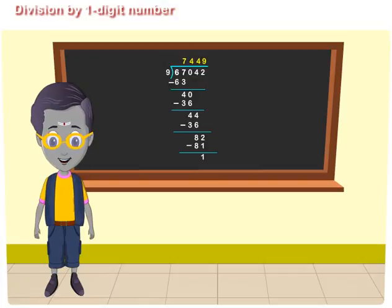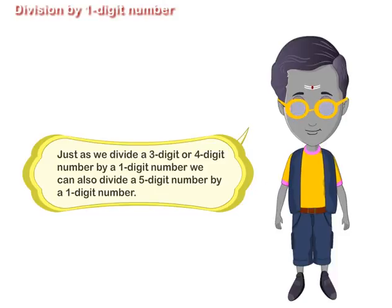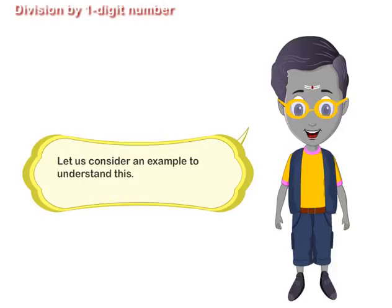Division of a 5-digit number by a 1-digit number. Just as we divide a 3-digit or 4-digit number by a 1-digit number, we can also divide a 5-digit number by a 1-digit number. Let us consider an example to understand this.